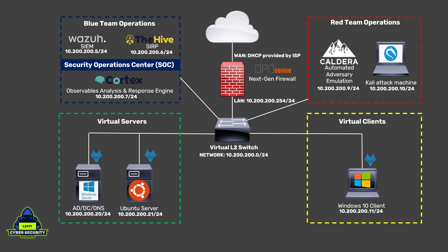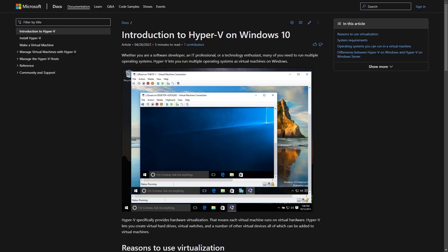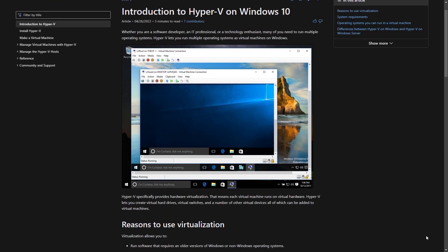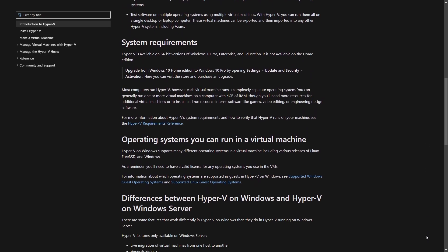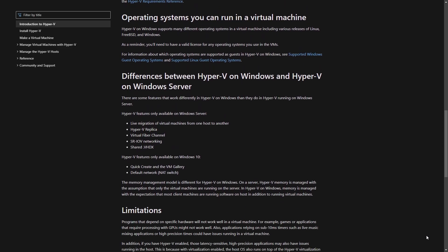My final goal of this lab series is to show you from both a blue team and a red team perspective how to attack and defend and ultimately improve the network security posture of this fictional business. I believe that setting up a lab like this will bring you as close as possible to real-world scenarios. And with these skills and concepts that you learn here, you should easily be able to transfer these skills with minor adaptations to real-world scenarios. For this lab, I'm going to be building it using Hyper-V. However, with minor adaptations, you can follow along using VirtualBox or VMware, or even set it up using your preferred cloud platform.